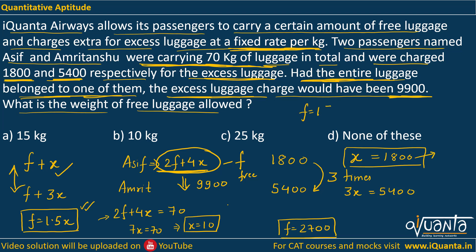So f equals 15 kg. To clarify: when we wrote 2,700, that was the amount charged for the excess luggage in rupees, whereas f equals 15 is the actual weight in kg of free luggage that is allowed. So the answer is 15 kg. I hope the explanation is clear. If there is any doubt, please ask again.